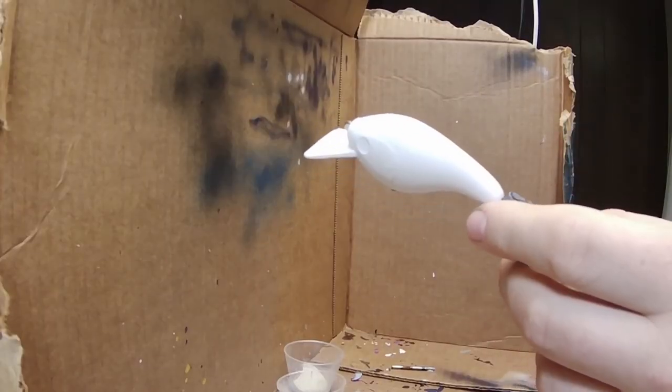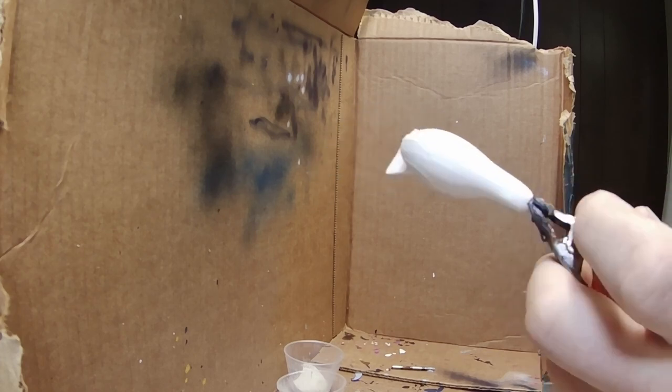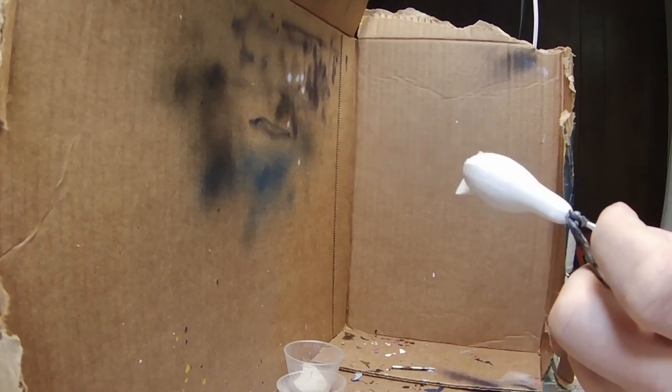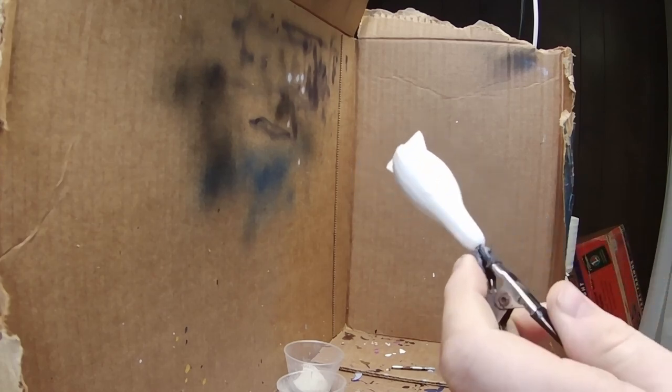So these are now done. They're all dried up. We are going to start on the paint. I don't really have a plan for the colors here. So we're going to start out with this silver base in the bottom, and then we're just going to go from there. We're going to wing it.